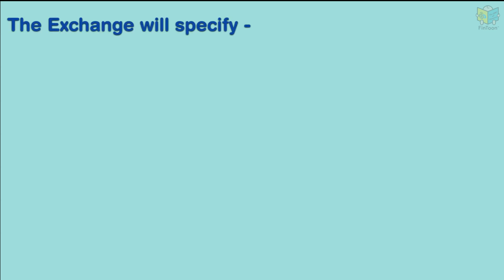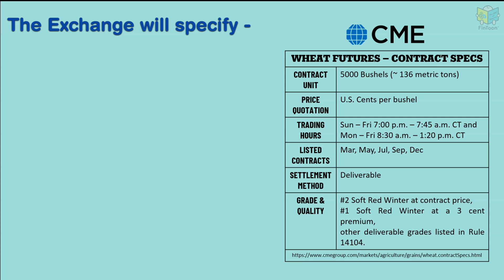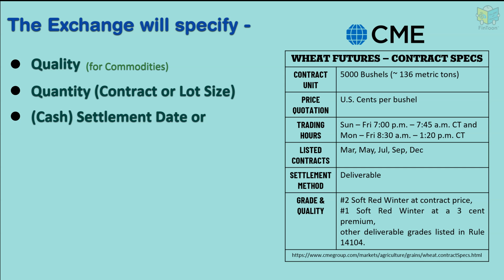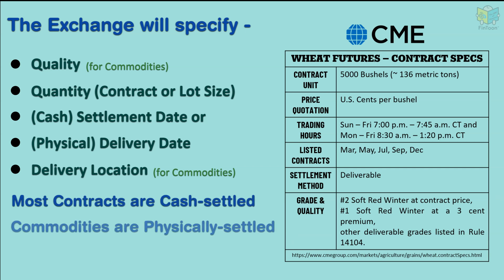The exchange is responsible for setting the specifications of each contract — the quality, quantity, the settlement date or physical delivery date and location. Most of the contracts are cash settled, but for commodity futures, traders can opt for physical settlement. These contract specifications are the same for all traders and these contracts cannot be customized as per individual preferences.